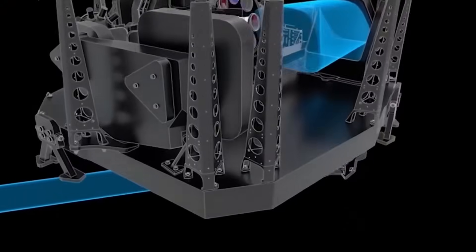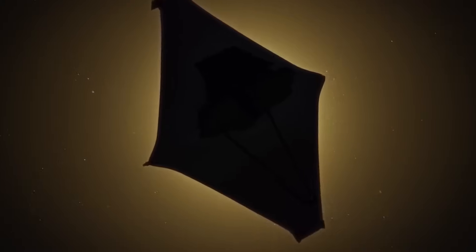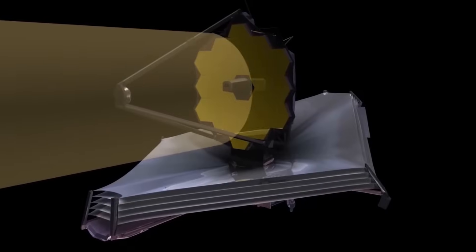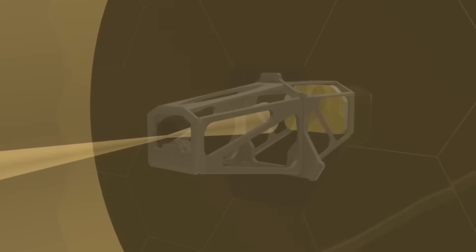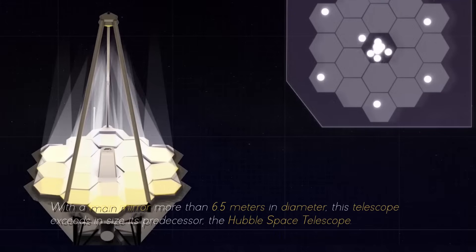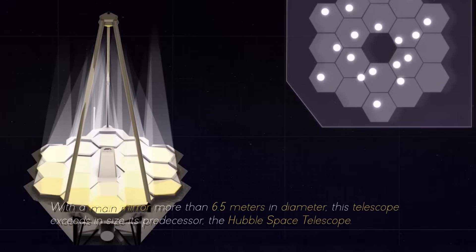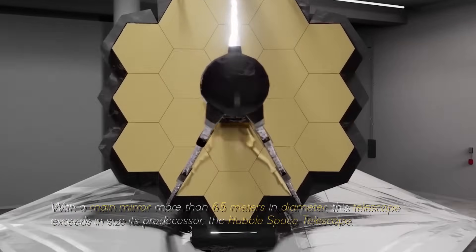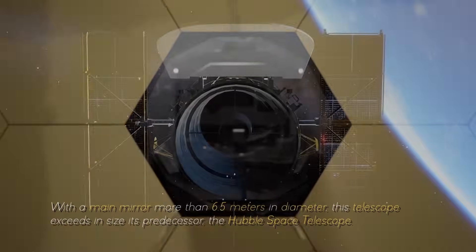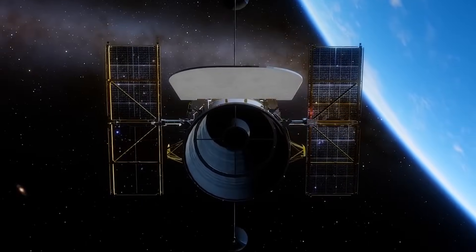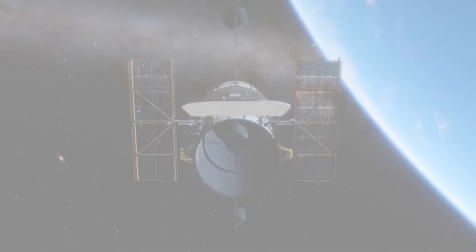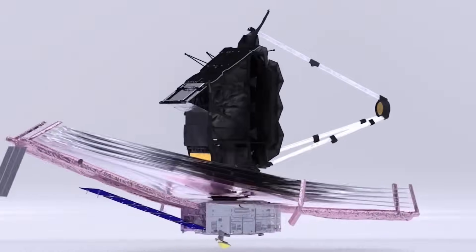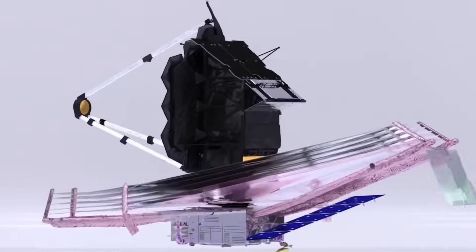The James Webb Space Telescope is equipped with an array of advanced scientific instruments carefully designed to observe the universe at an unprecedented range of wavelengths. With a main mirror more than 6.5 meters in diameter, this telescope exceeds in size its predecessor, the Hubble Space Telescope.